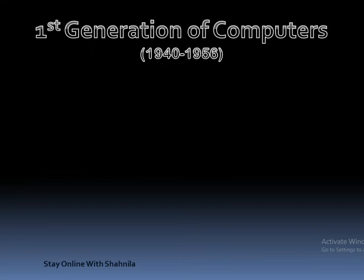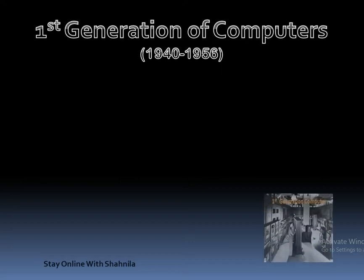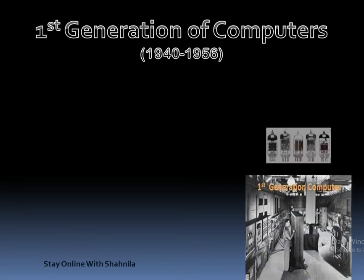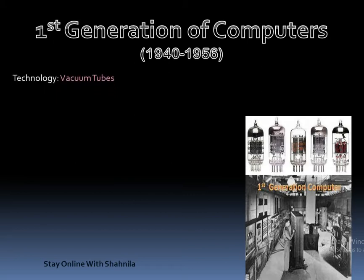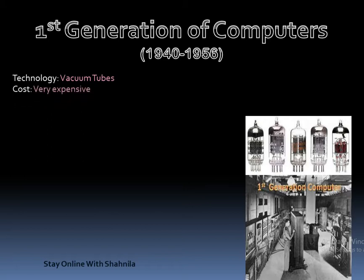The period of the first generation of computers was from 1940 to 1956. In first generation computers, vacuum tubes were used as the basic electronic element. Vacuum tubes were made up of a glass bulb, so they produced a lot of heat and failed frequently. Teams of engineers were hired to find and replace the defective tubes.